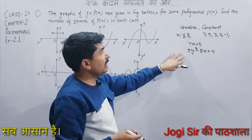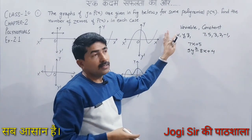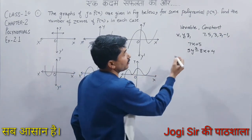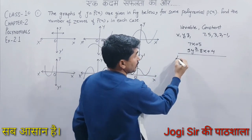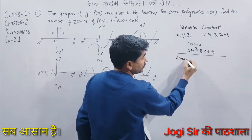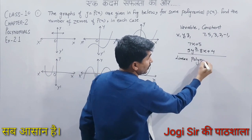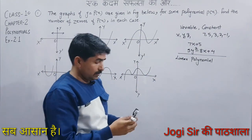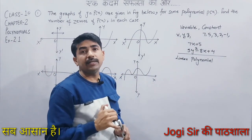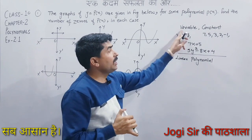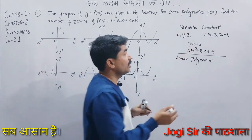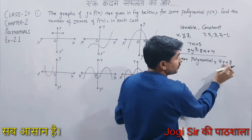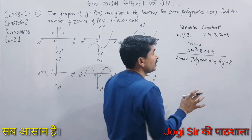You know very well about variables. We studied these things in great detail in 9th class. Among polynomials, the first type is the linear polynomial, in which the highest degree of the variable is 1. For example, 7x plus 5, or 9y plus 8 — the highest power of y is 1. These are linear polynomials.